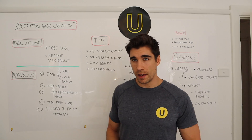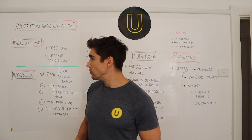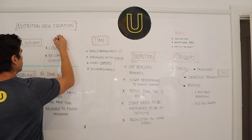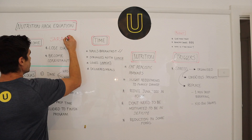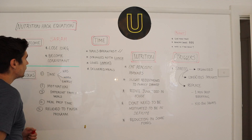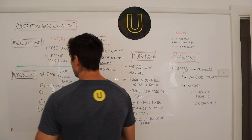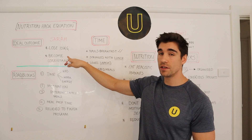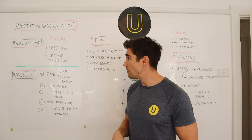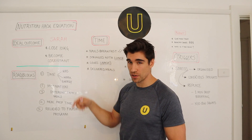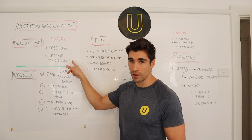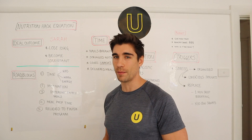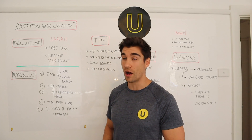In this example I'm going to use Sarah, just a random name. Her goal is she wants to lose 10 kilograms and she just wants to become consistent. She's got a weight loss goal and she wants an outcome where she can obviously consistently maintain this for life.